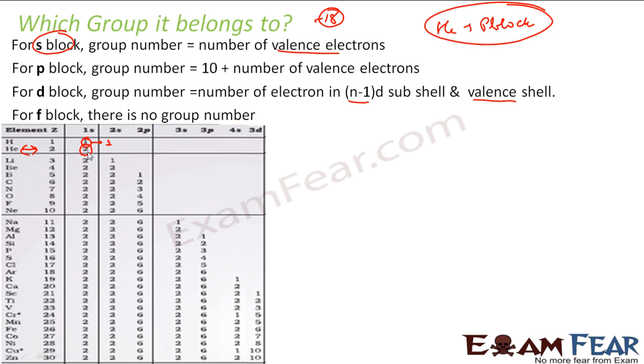Helium is in p block and its atomic number, the valence electron is 2. So the group number will be 10 plus 2. So it should be 12. But again here is an exception. Helium is in 18th group. This rule does not apply for helium because helium, we have changed the group and all. So let us not discuss helium in this. It is an exception.